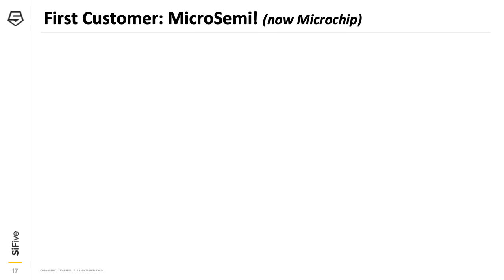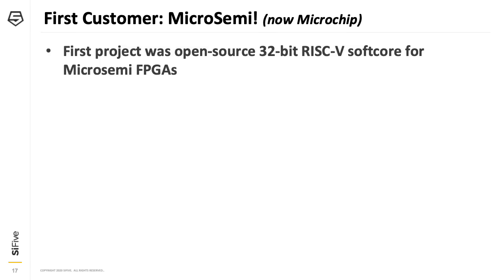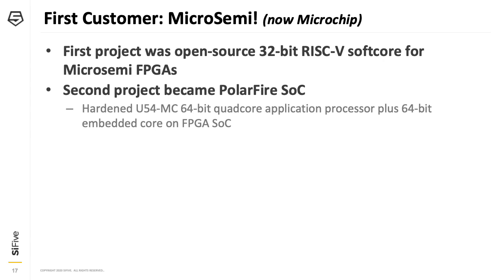Our first customer was MicroSemi, now part of Microchip. They asked for an open-source RISC-V 32-bit soft core to map to their FPGA, and also wanted a very fast turnaround as they had their own customer waiting. We decided to set aside our own SoC project and go full steam ahead to deliver this to MicroSemi, and we managed to complete the core on a very aggressive schedule — MicroSemi was happy with the result. Based on the success of this project, we secured a much larger second project: a 64-bit RISC-V quad-core applications processor with custom real-time features hardened as part of the PolarFire SoC, which MicroSemi announced last December at the RISC-V Summit.